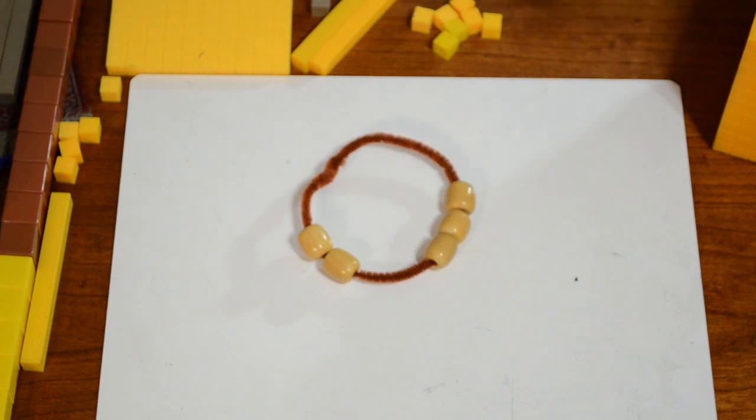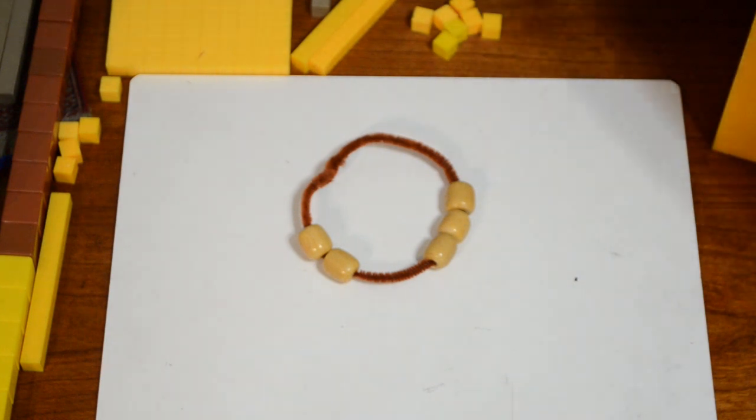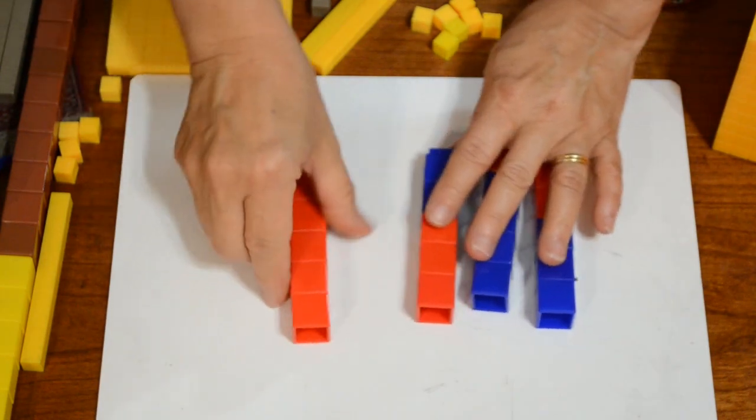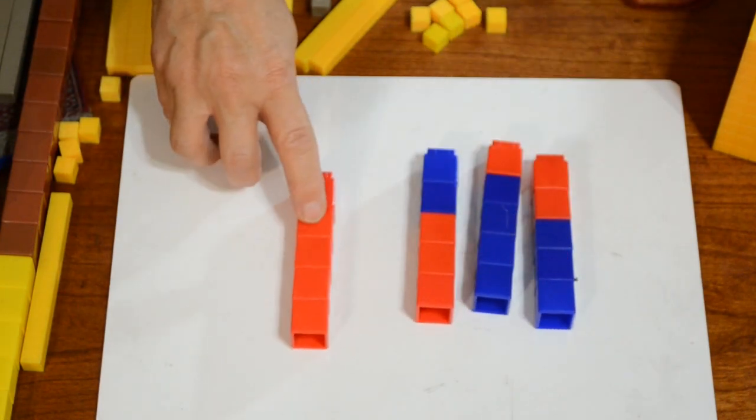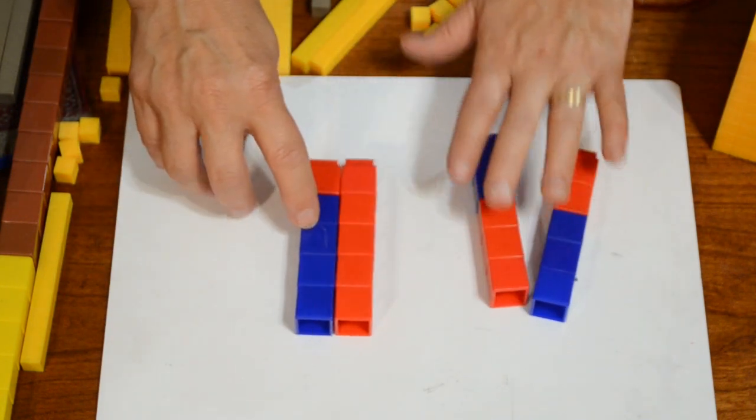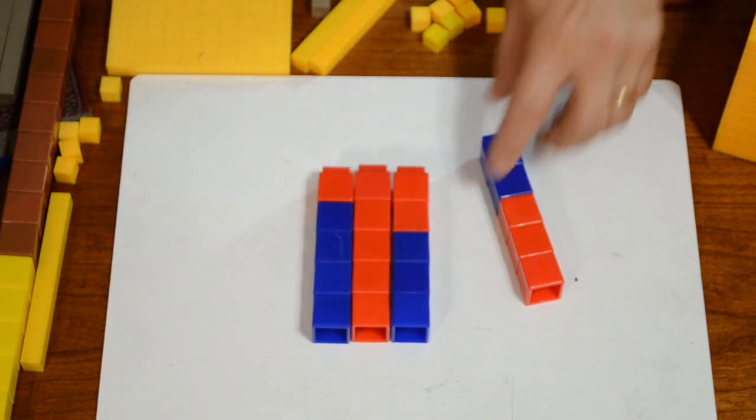Later, children might use the same examples, the same numbers, and use unifix cubes to highlight equality. They might learn that we have five cubes. Five cubes can be made with four plus one. Five cubes can be made with three plus two.